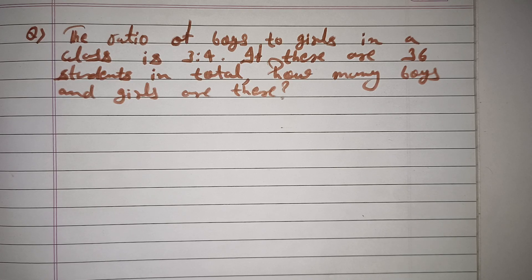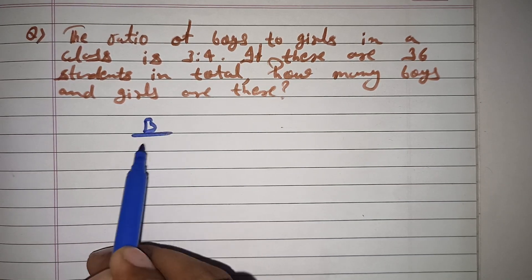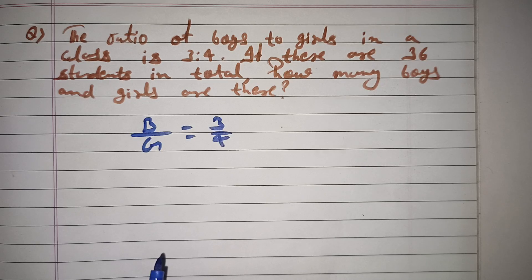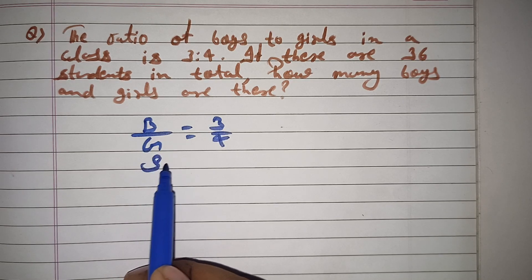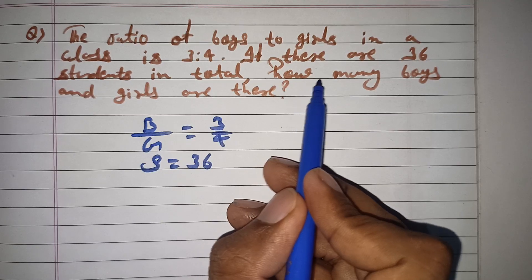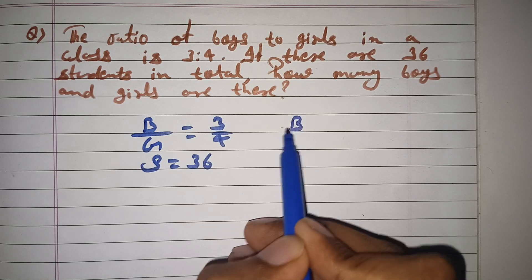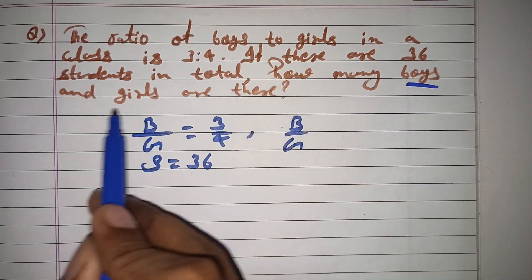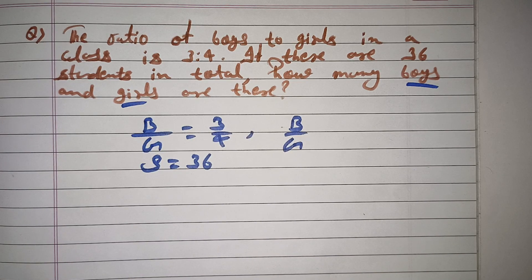So here is the ratio of boys to girls. How many boys and girls are there? Total you have 36 students. Let me explain a good way how the ratio works.